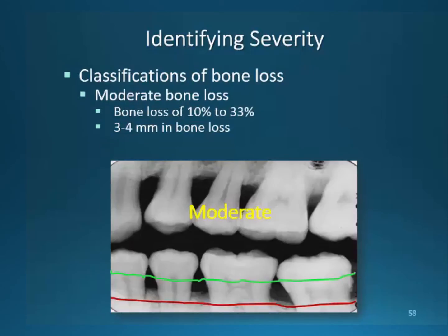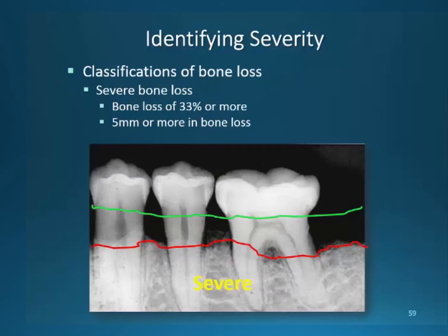Moderate bone loss occurs when 10 to 30% of the supporting bone has been destroyed. Note the changes between the green and red line — the red line indicates the migration of bone and the loss of support. 3 to 4 millimeters of bone has been lost, and when probing depths reach 3 to 4 millimeter readings, this moderate bone level is determined and is most common. Severe bone loss, also referred to as advanced, is the most threatening bone loss in tooth survival. This aggressive type involves more than 33% of supporting bone. Probing measurements range in the 6 millimeter range and higher. The prognosis of this situation is relatively poor.